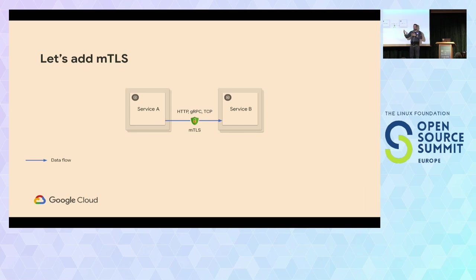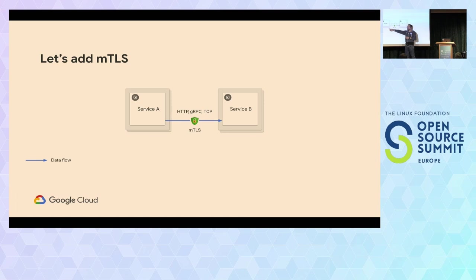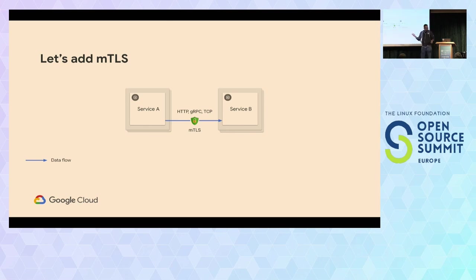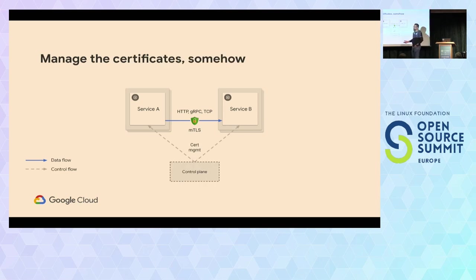In an MTLS world, when service A makes a TLS call to the server, it also sends its own certificates, which allows the server to verify its identity. If you have two containers you can just mount a bunch of certificates into service A and service B, use a library, and use them to make the call. But doing this at scale for thousands of containers can be complicated — you have to issue, sign, verify, and rotate them. So some people came up with the idea of having a control plane that does certificate management centrally, and also enforce policies, collect telemetry, do routing, and more.